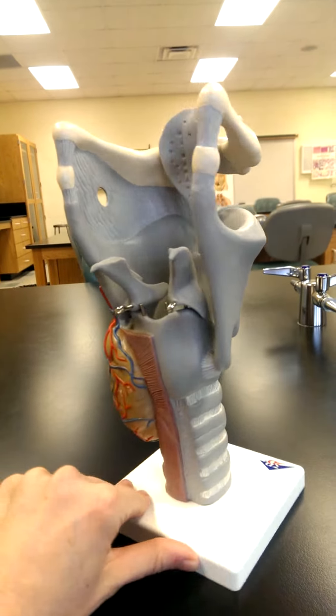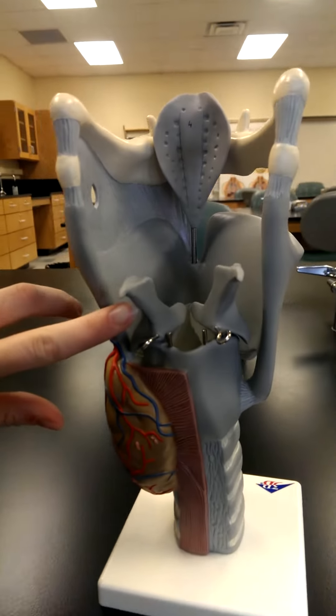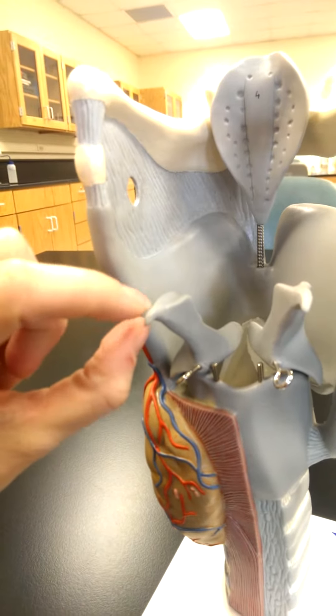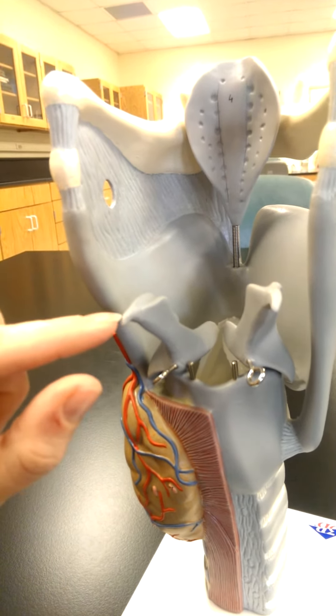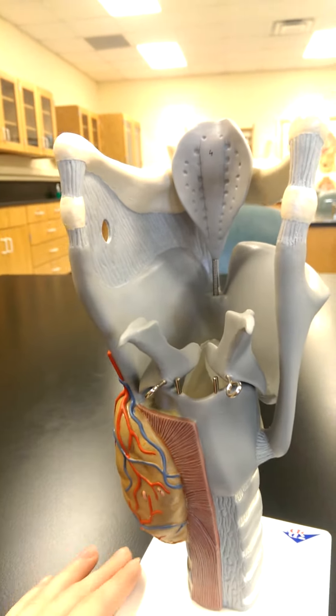Sitting on the back of that cricoid cartilage here are the two arytenoid cartilages, and then the little sharp points on the arytenoid cartilages here are the corniculates. So this is a corniculate cartilage and this is a corniculate cartilage.